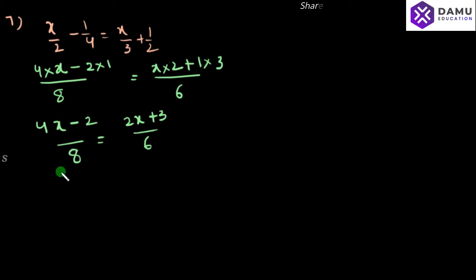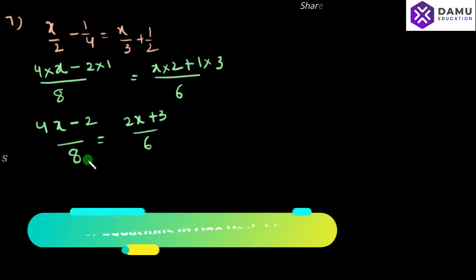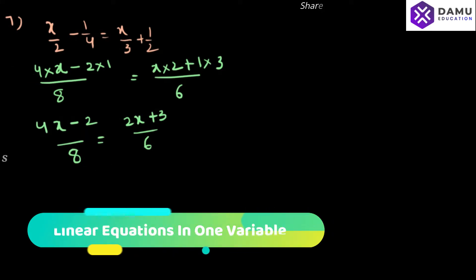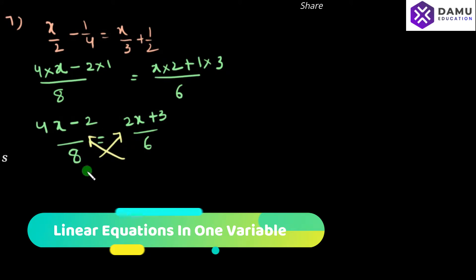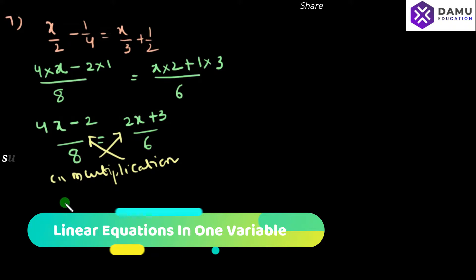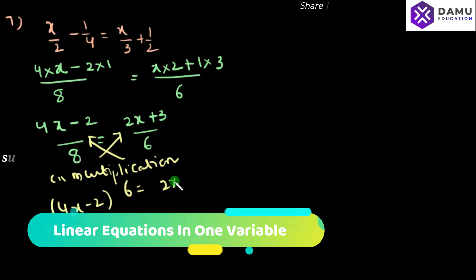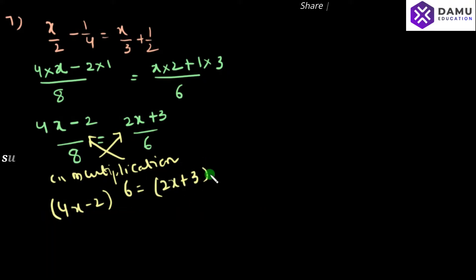So, 4x minus 2. What we have to do here is take cross multiplication — multiply cross multiplication. So, 4x minus 2 into 6 will be equal to 2x plus 3 into 8.